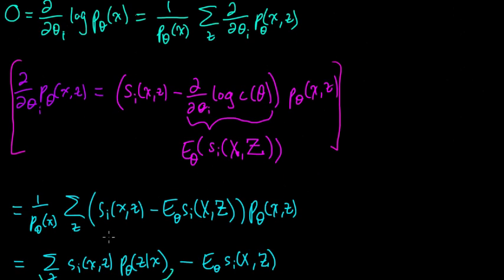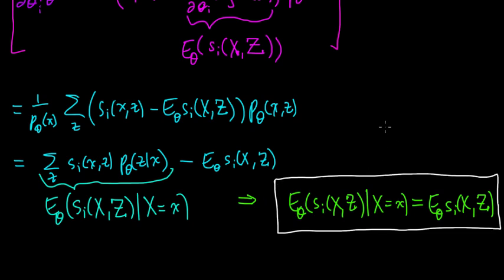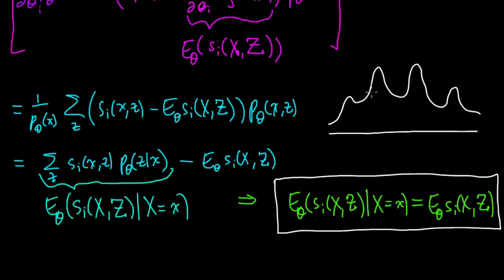We worked through this and found that any critical point of that function, as a function of theta, must satisfy this property. In general, a critical point does not necessarily guarantee a maximum. This likelihood function, p_theta of x, can have multiple local maxima, so this will certainly not be guaranteed to give us a global maximum. But maybe if we try to solve it, at least we'll get somewhere useful.